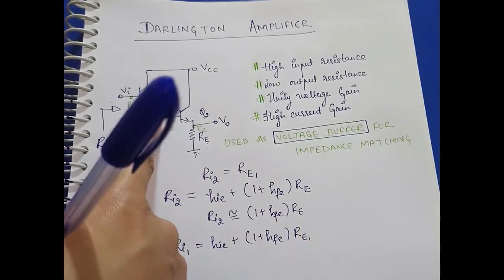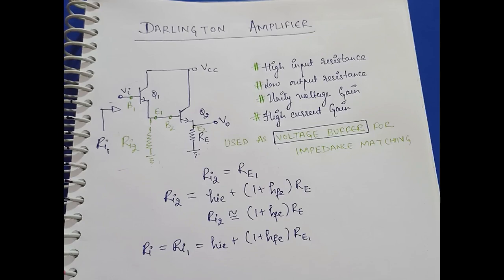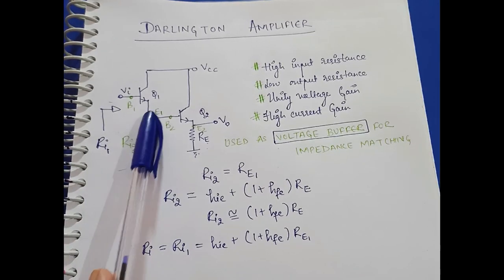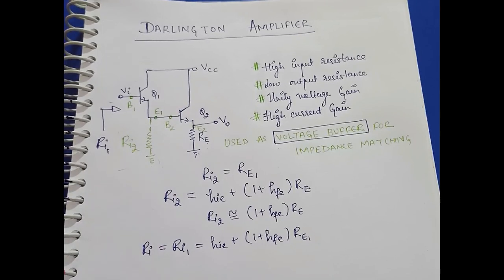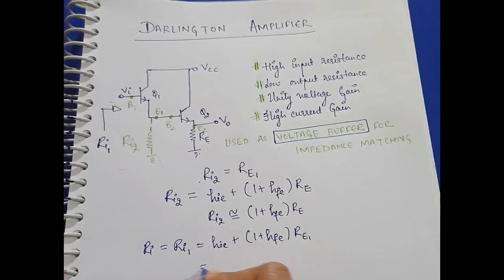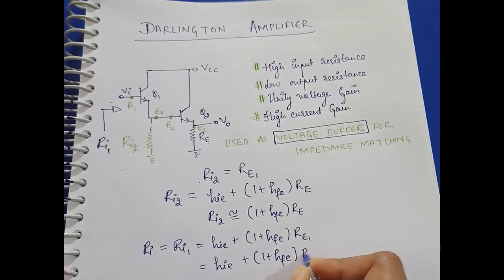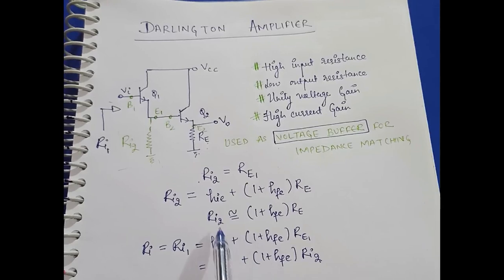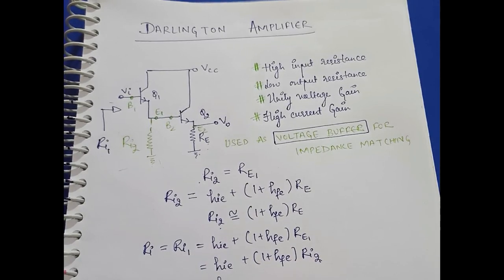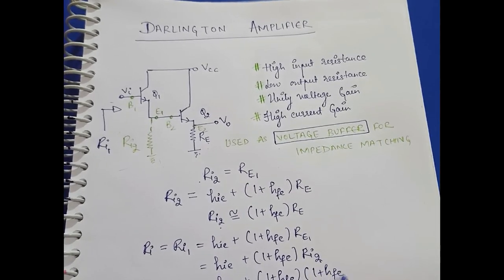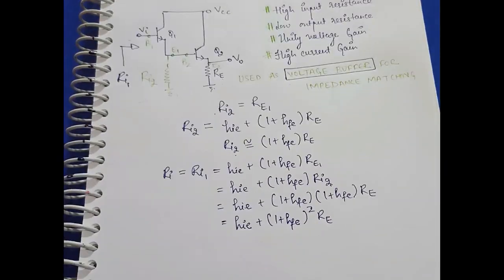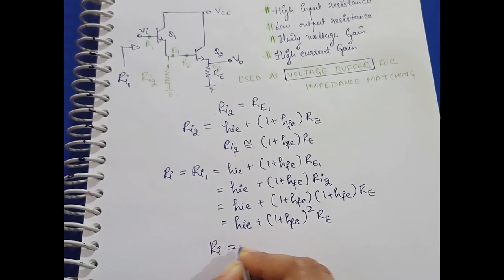Here RE1 is the emitter resistance of the Q1 amplifier, and RE1 is also the input resistance for Q2 amplifier, as already mentioned. Replacing it with the ri2 term and substituting the value of ri2, we get the overall input impedance.